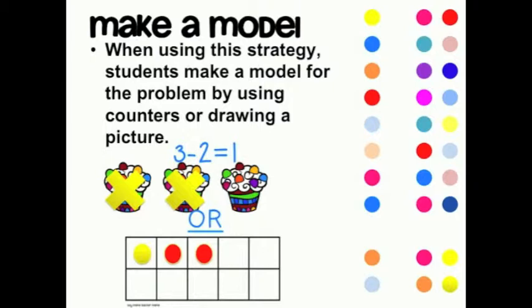The same process applies to using two-sided color counters. I started with three yellow counters. My problem tells me I am taking two of those counters away, so I turned two counters over onto the red side. This shows I had three in all and took two away, which were my red counters. I have one yellow counter remaining, so the answer to my problem 3 minus 2 is 1.